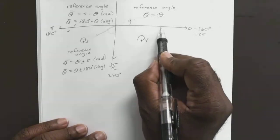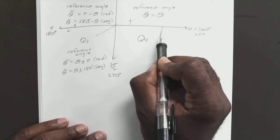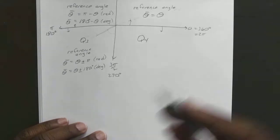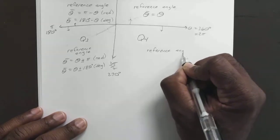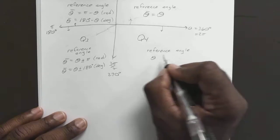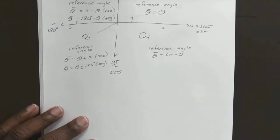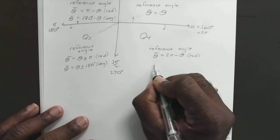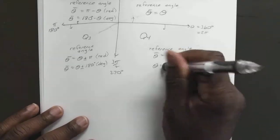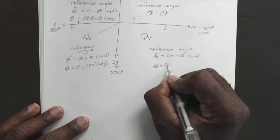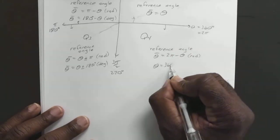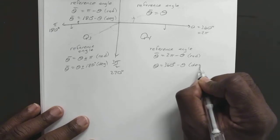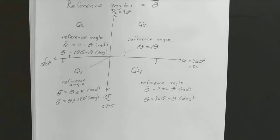Now in quadrant four, remember we start at our x-axis and swing it down so many degrees. So if we swung it down 30 degrees, our reference angle would be 2 pi minus theta — that's radians. For degrees, it's 360 degrees minus theta. So those are all of your reference angles.